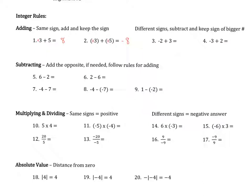Now, what if they have different signs? If they have different signs, we subtract the two numbers and keep the sign of the bigger number. For example, number 3: we have negative 2 plus 3, so we can think of it as 3 minus 2. I always subtract bigger minus smaller, so 3 minus 2 is 1, and it'll be positive because the sign in front of the larger number is positive. For number 4 we have negative 3 plus 2 — so 3 minus 2 is 1, but since the larger number is 3 and it had a negative in front of it, the answer will be negative.